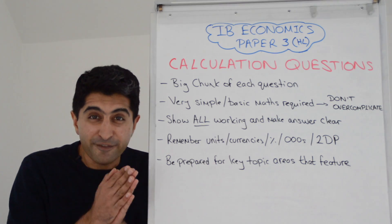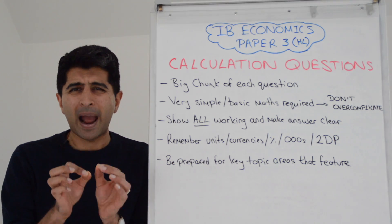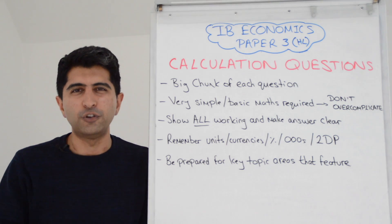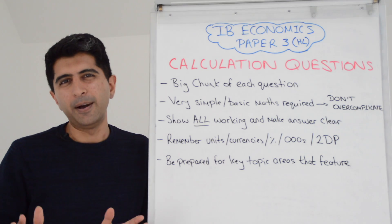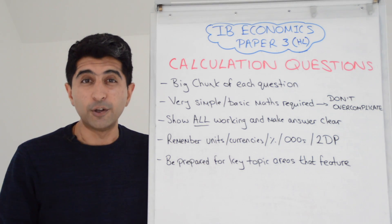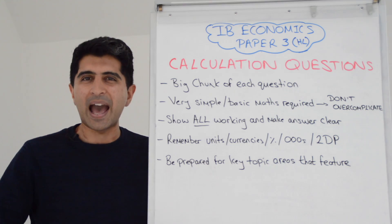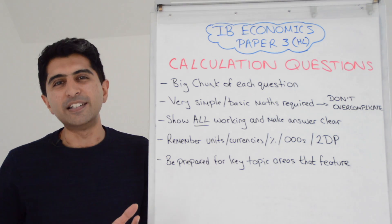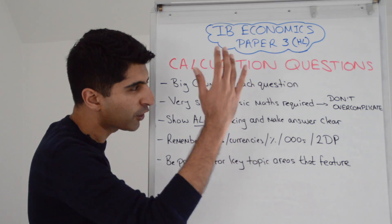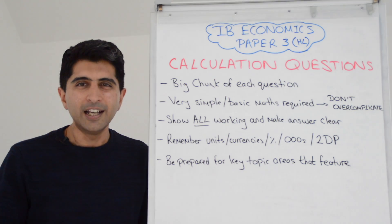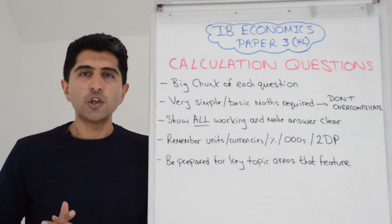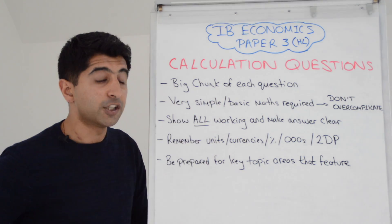Note that this is going to be very simple, very basic maths that you need. A lot of the time there is a misconception that Paper 3 for high level students is the maths paper. Well, not really. It's very basic maths. The hardest thing you'll probably have to do is a percentage change. Otherwise it's adding, taking away, multiplying, dividing, percentage of something, percentage change. It's really simple stuff. So don't over complicate things in your revision — don't think you're going to have to do some really fancy maths. It's not a maths paper.